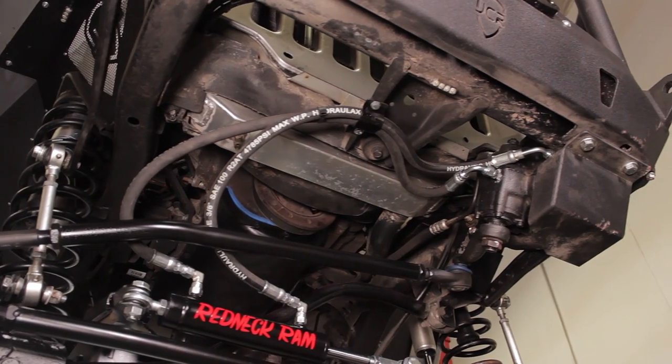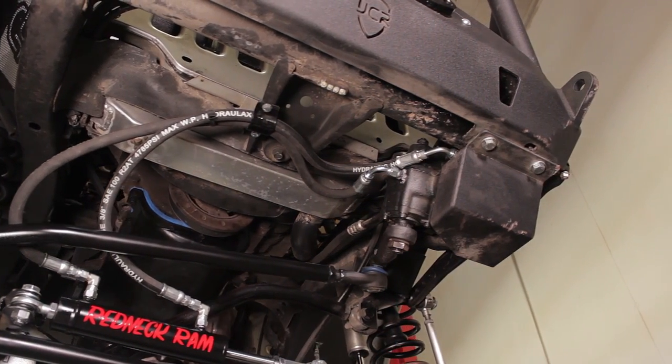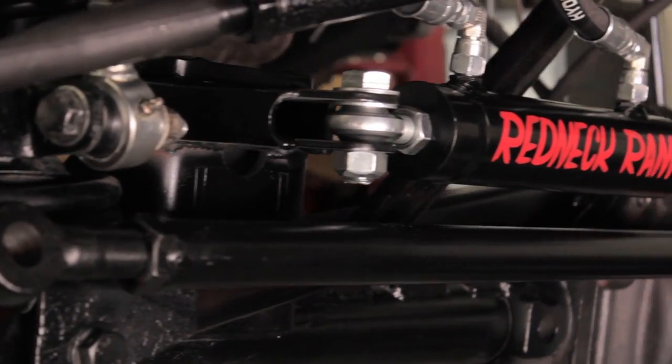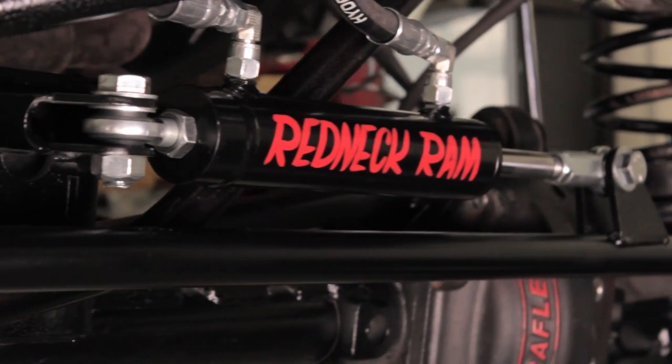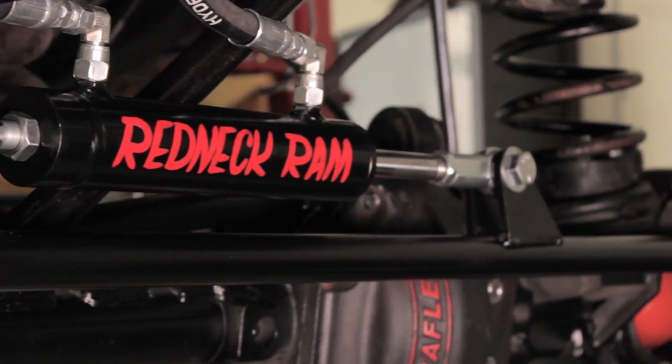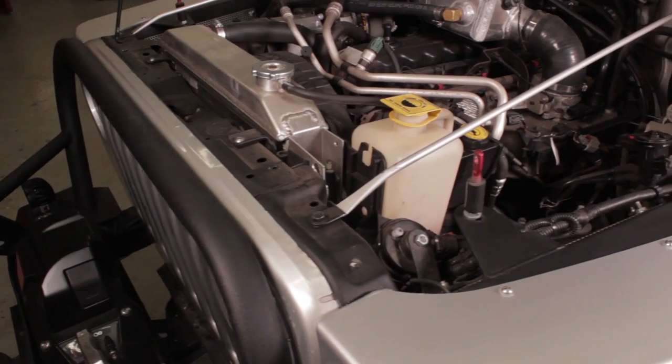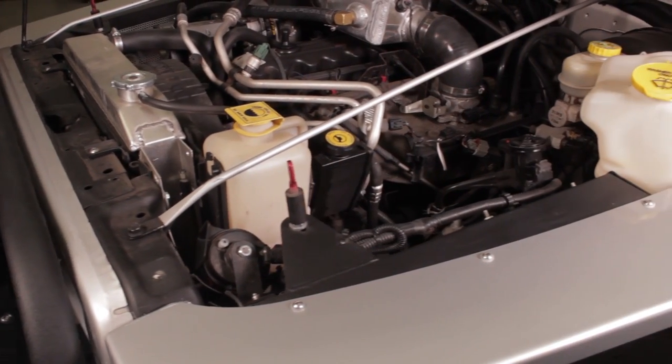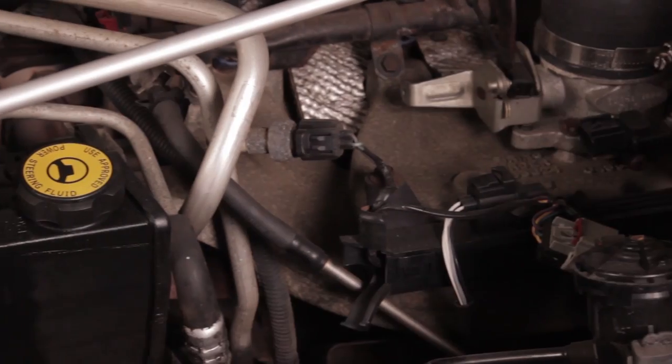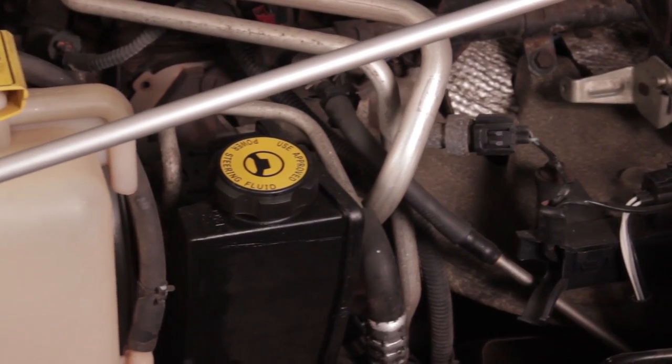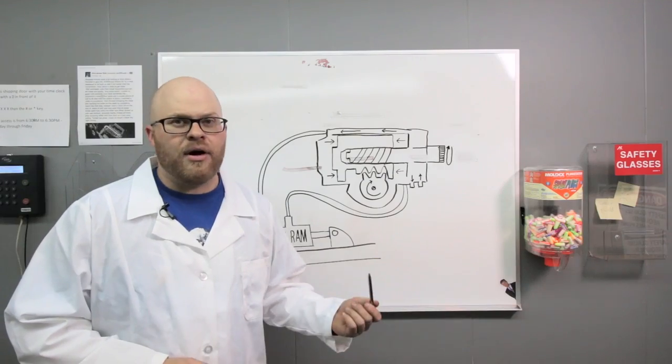West Texas Off-Road set us up with a modded steering box, a ram kit with brackets and hoses for our own stretched LJ Project Descender, and we really needed that because we're running sticky 38-inch Falcons. We chose to do some old school DIY pressure mods to our factory Jeep pump, but West Texas Off-Road can help you in that regard as well. Just give them a call.